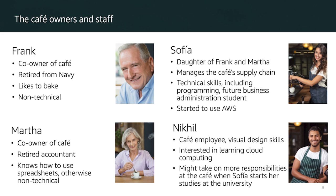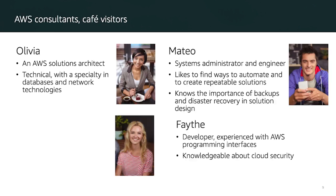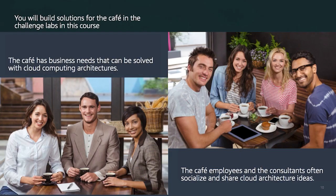The cafe owner and staff include Frank and Martha as co-owners, Sophia as the daughter of Frank and Martha, and Nickel as a cafe employee. We also have Olivia, an AWS solutions architect who recently moved to the downtown area and frequently visits the cafe. She enjoys talking with Sophia, and they will work to elevate the technical architecture of the cafe, adding multiple layers to make the cafe website and store highly available and highly scalable. We also have Matteo, a systems administrator and engineer, and Faith, a developer experienced with AWS programming interfaces.